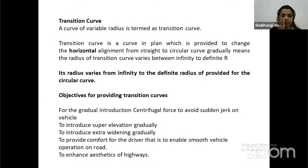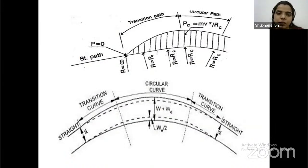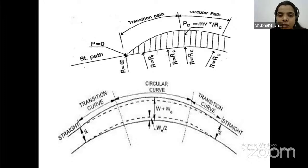A transition curve is a curve of variable radius. It is a curve in plan provided to change the horizontal alignment from straight to circular curve gradually, and the radius of transition curve varies from infinity to a definite radius. Its radius varies from infinity to the definite radius provided for a circular curve. Objectives of providing transition curve: for gradual introduction of centrifugal force to avoid sudden jerk on vehicles, to introduce super elevation gradually, to introduce extra widening gradually, to provide comfort for the driver and to enable smooth vehicle operation on the road. Types of transition curve: spiral or clothoid, cubic parabola.